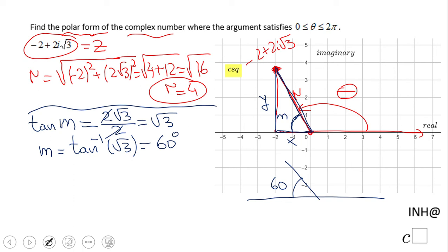Obviously this theta would be 180 minus 60, 120 degrees. That is how much that theta will be: 180 minus 60, 120 degrees, or 2 pi over 3.